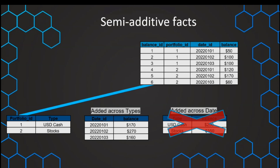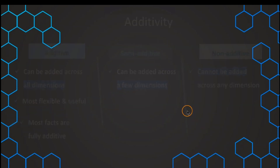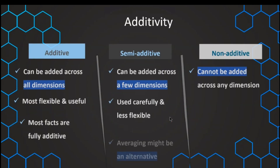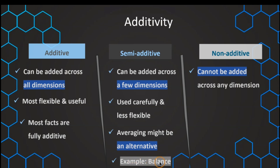The date dimension is the typical example of a dimension across which semi-additive fact values cannot be summed. An alternative is to take the average across the date dimension — a daily average could still be meaningful. We have to be very careful to use semi-additive facts in the right way, avoiding summing them across all dimensions. The account balance is the classic example: addable across portfolio types, but not across dates.